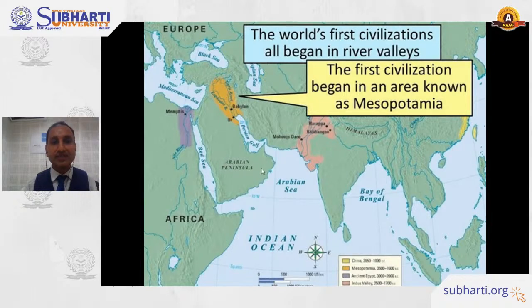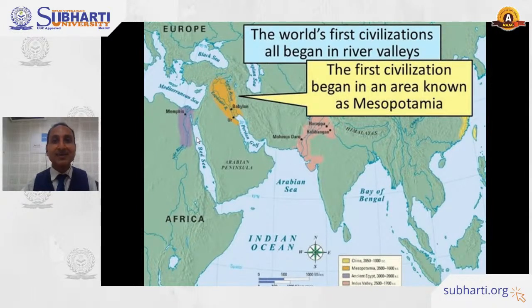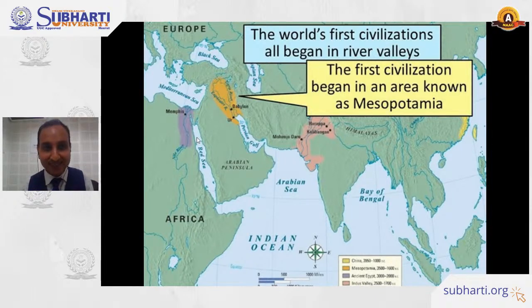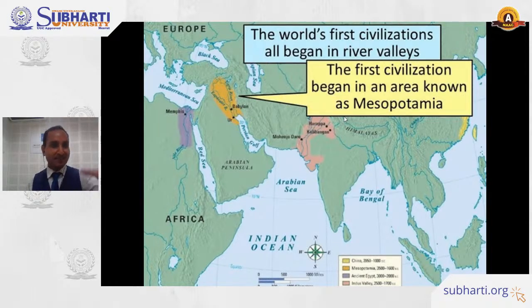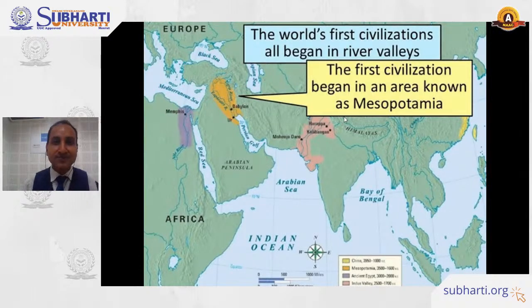We call this area the Fertile Crescent. This is the area where evidence of beer has been traced. The first civilization that started taking place in Mesopotamia — which is current Iraq, the border of Iraq, Iran, and Syria — and Egypt, are the areas where the first traces of beer brewing have been discovered.